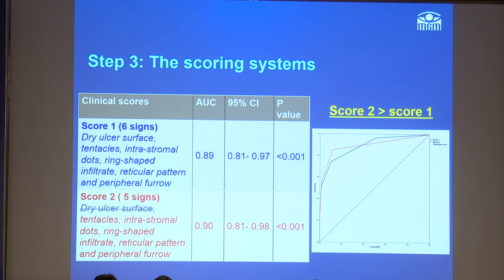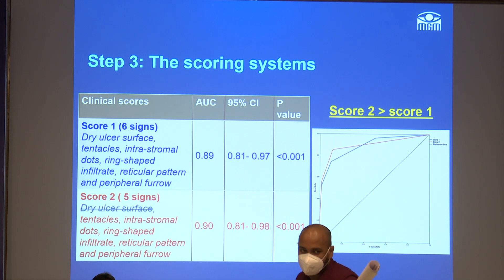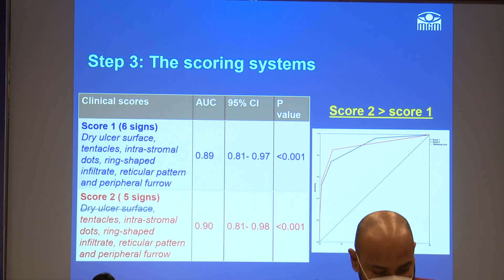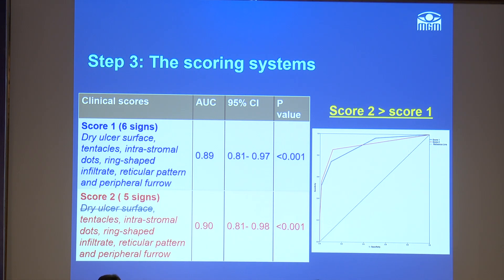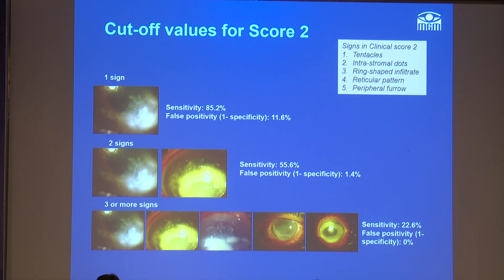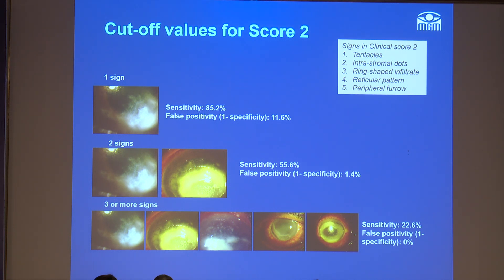Using these signs we developed two scores. The first score had six signs and the second had five signs. In the second score we left out dry corneal ulcer because, although it was associated more with pythium keratitis in our analysis, it was present in 50% of fungal keratitis cases and is classically associated with fungal keratitis. Both scores had a very high AUC of 0.89 and 0.90. We also developed cut-off values for score 2: presence of a single sign had a false positivity rate of around 11.6%; two signs reduced it further to 1.4%; and three or more signs practically diagnoses it as pythium keratitis at the slit lamp.